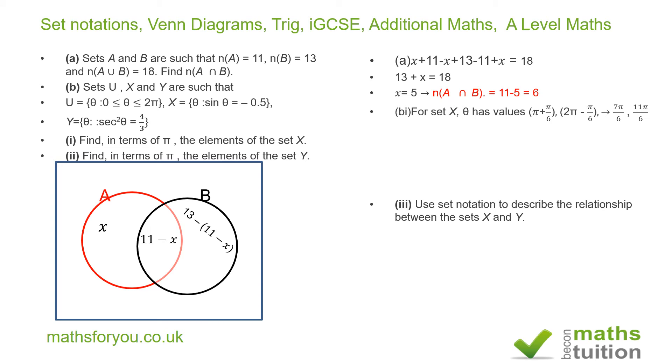Now for set Y, we are told that sec squared theta is equal to 4 over 3. If we now take the square roots of both sides, we end up with sec theta is equal to plus or minus square root of 4 divided by the square root of 3, which then gives us 2 over root 3, plus or minus that is.